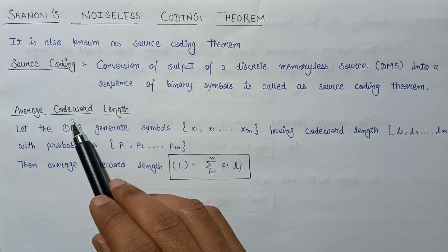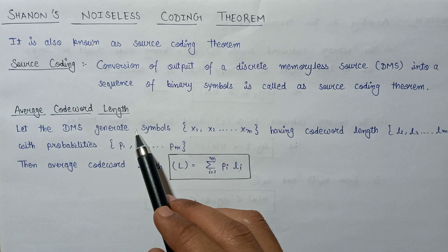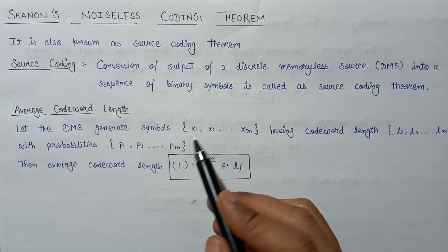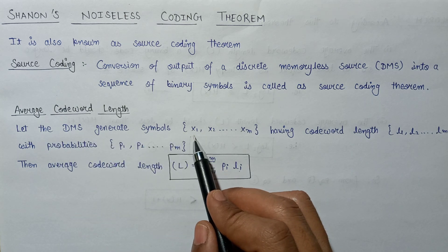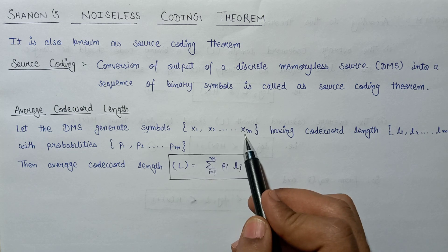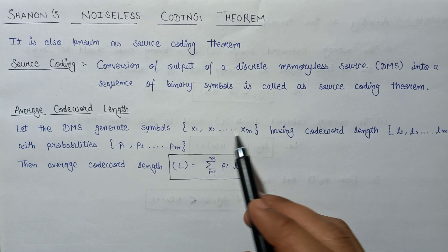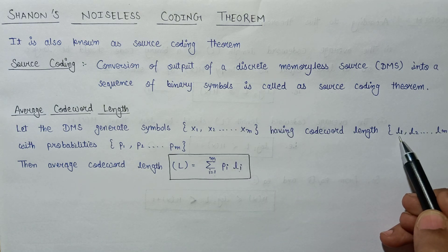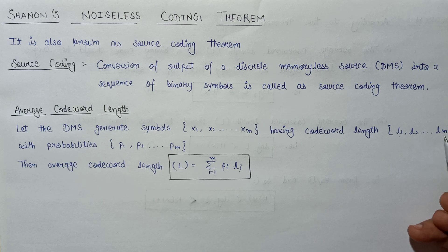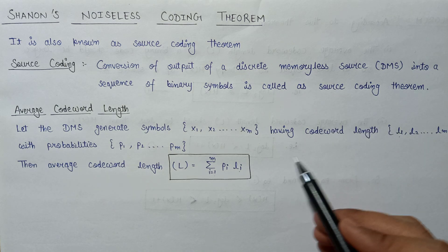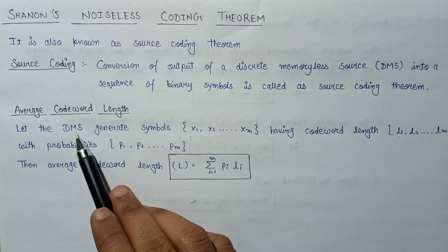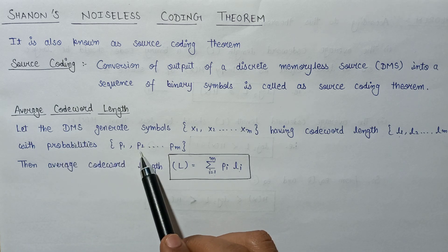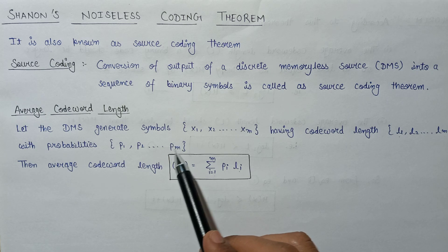Now let's have a look at the average codeword length. Let the discrete memoryless source generate m number of symbols ranging from x1, x2, till x_m. Each of these symbols has a codeword length denoted by l1, l2, till l_m.